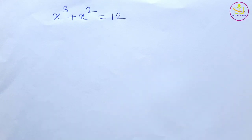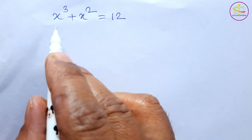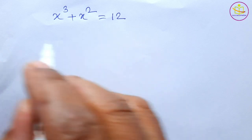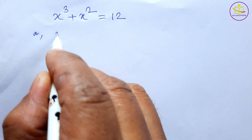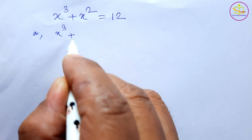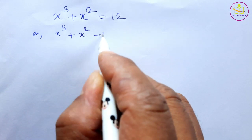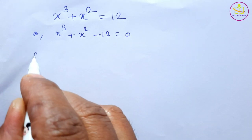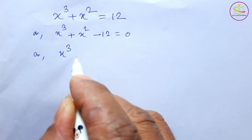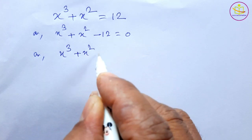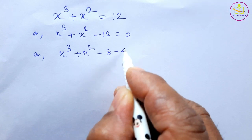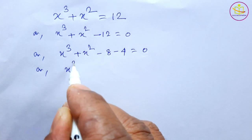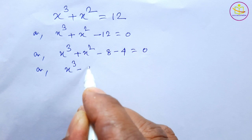Welcome to SuccessMeter. x³ + x² = 12, or x³ + x² - 12 = 0, or x³ + x² - 8 - 4 = 0, or x³ - 8 plus x² - 4 = 0.